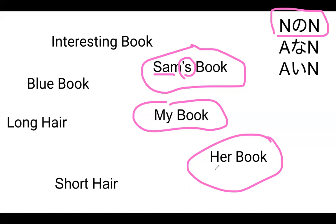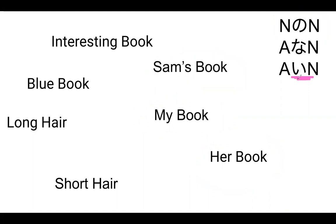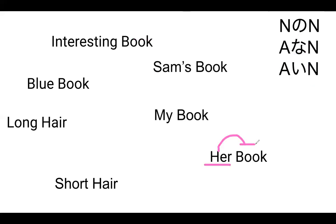In English, we have adjective-noun phrases like 'blue book,' 'long hair,' 'short hair,' 'interesting book' — these all go before the noun. In Japanese, adjectives connect with the noun using either an い or a な. For nouns, it's just の. Adjectives are a little confusing, but basically if you see an い after an adjective — like おもしろい ends with that い sound — you already know it's an い-adjective. If you see something like ふしぎ, ending with a gi sound and no hiragana い, then it's a な-adjective. That's basically how you can tell.